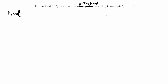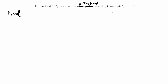This is a pretty straightforward proof. We're just going to use what we're given, which is that we have an n by n orthogonal matrix, and then use some basic determinant properties to get the solution. So we're going to start with what we're given, which is that Q is an orthogonal matrix.